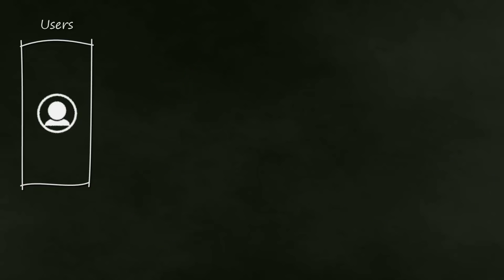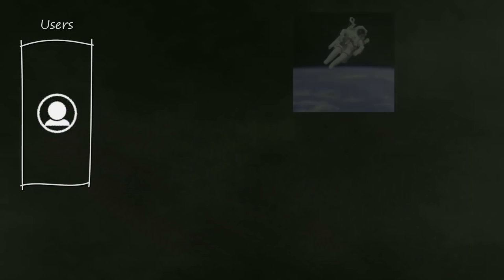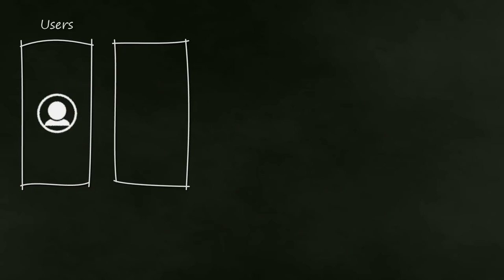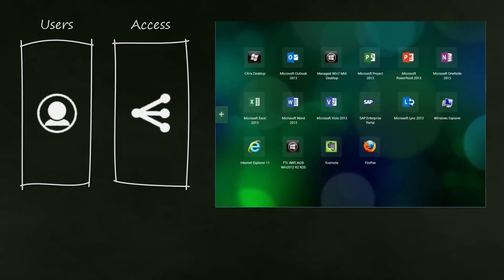In addition to any device, users can also access the environment from anywhere. The second layer of our architecture is the Access Layer, which defines how users will access their resources. The primary mechanism for this is Storefront, which provides the visible front-end to your app and desktop store so users can subscribe to and launch their applications after successfully being authenticated.